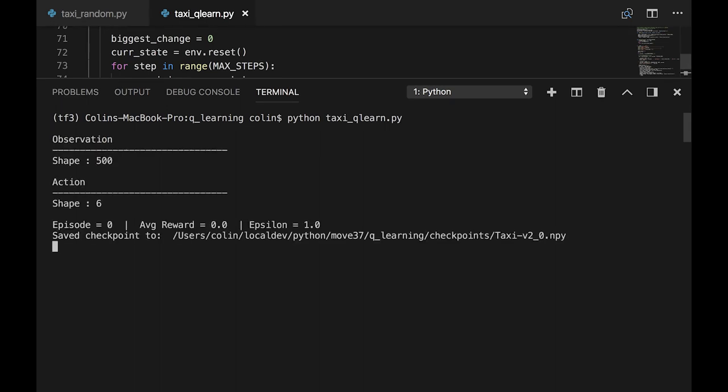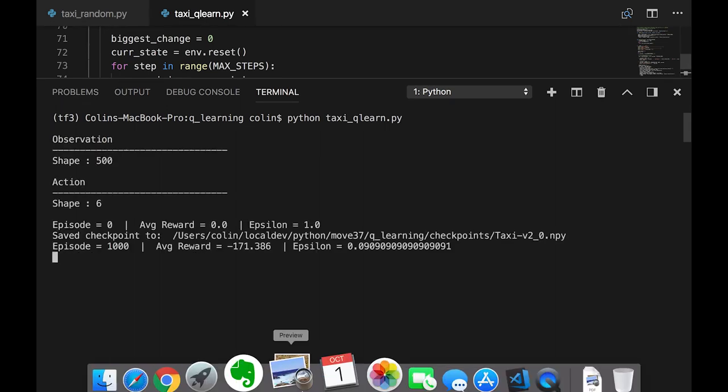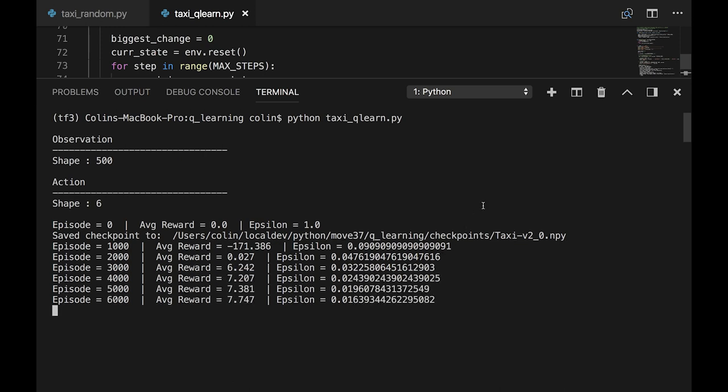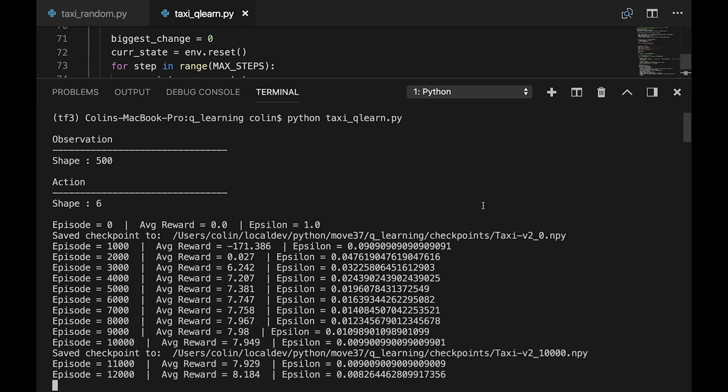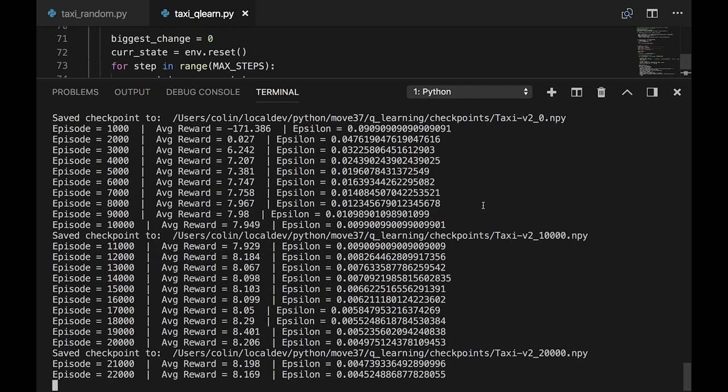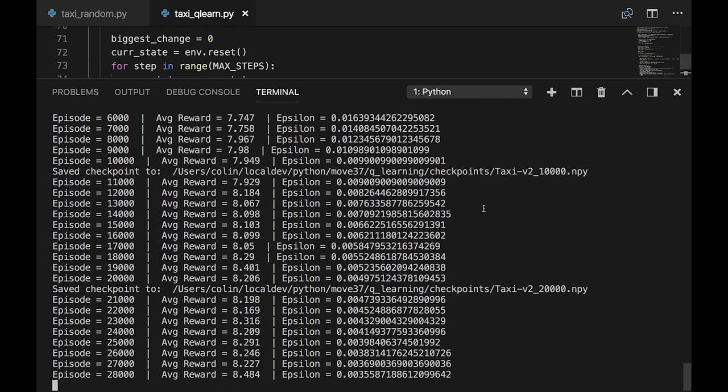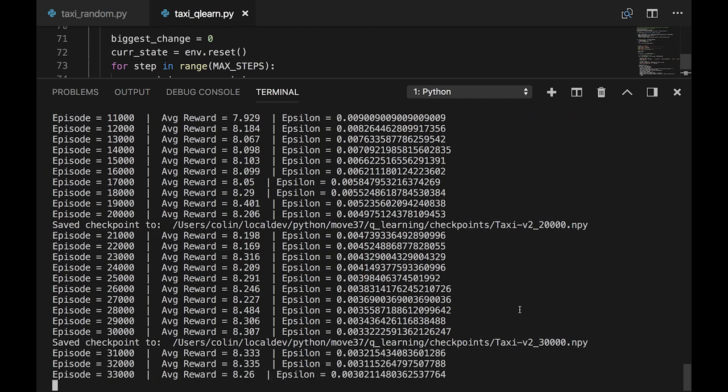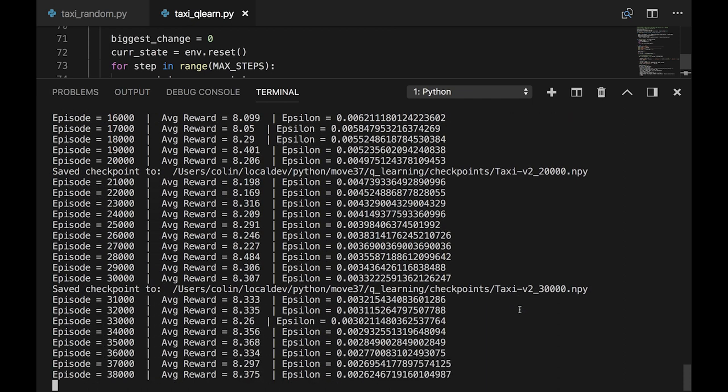Then, after the chosen number of episodes are complete, we print the average time each state has been visited purely for statistical purposes. Finally, we plot the deltas to visualize how our algorithm has converged over time. I've taken a moving average in order to smooth things out since the data is very noisy.